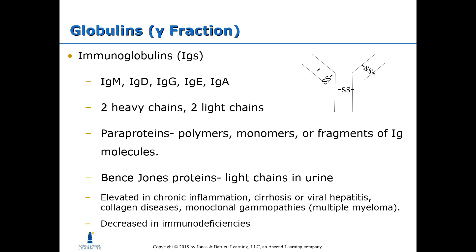Bence-Jones proteins are the light chains of immunoglobulins found in urine. In general, immunoglobulins can be elevated in chronic inflammation, cirrhosis, viral hepatitis, collagen diseases, and monoclonal gammopathies such as multiple myeloma. They are decreased in immunodeficiencies.